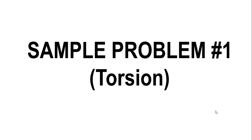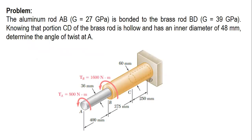In this video, I am going to solve a sample problem about torsion. Here is the problem. The aluminum rod AB with a modulus of rigidity of 27 GPa is bonded to the brass rod BD with a modulus of rigidity of 39 GPa. Knowing that portion CD of the brass rod is hollow and has an inner diameter of 48 mm, determine the angle of twist at point A.